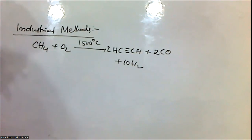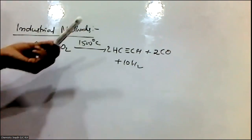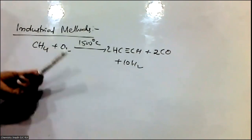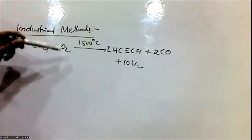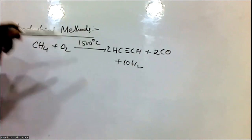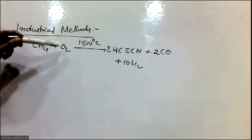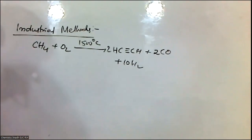Acetylene can be prepared by the controlled and high temperature partial oxidation of methane. When methane undergoes complete oxidation, carbon dioxide and water are produced. But acetylene can be prepared by controlled and high temperature partial oxidation of methane.